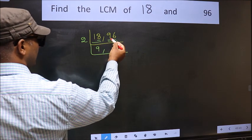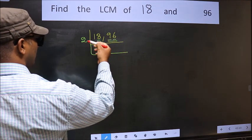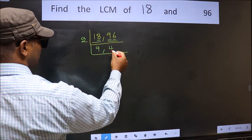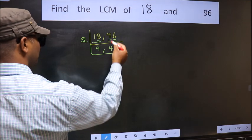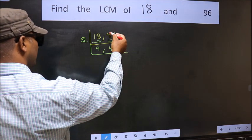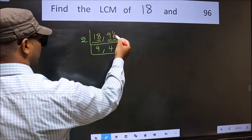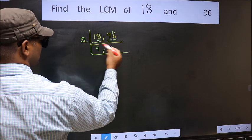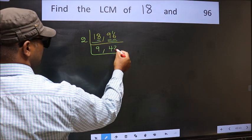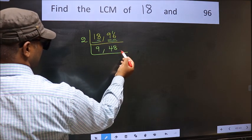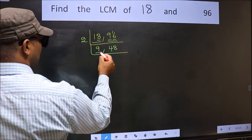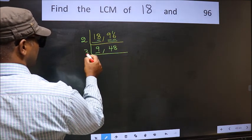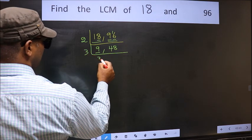Dividing 18 by 2 gives us 9. For 96: a number close to 9 in the 2-times table is 2 fours, 8. So 9 minus 8 is 1, carried forward gives 16. 2 eights are 16, so 96 divided by 2 is 48. Now we have 9 and 48.